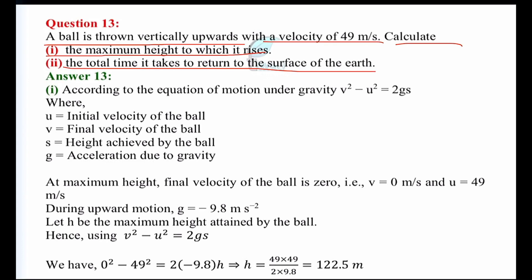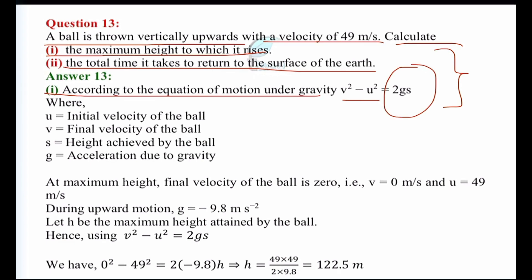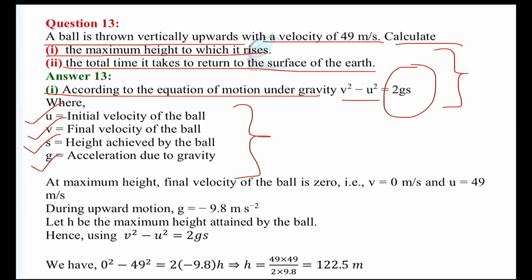We have three equations of motion. For this type of question — to find the maximum height (displacement) — we use: V squared minus U squared equals 2GS. Here, U is the initial velocity, V is the final velocity, S is the height achieved, and G is acceleration due to gravity. Since we want the maximum height, the final velocity V equals 0, and U is 49 meters per second.